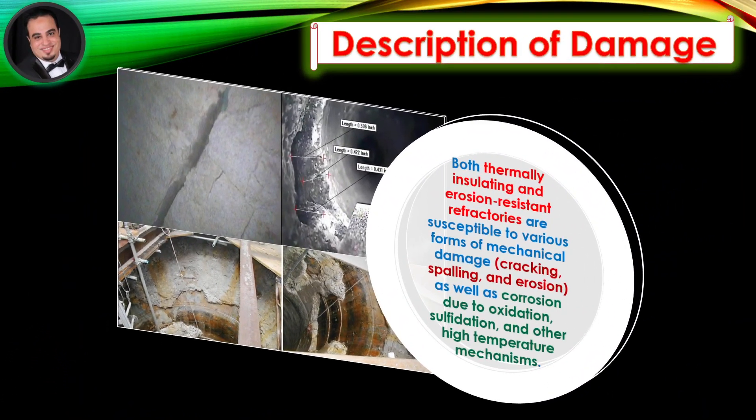Both thermally insulating and erosion-resistant refractories are susceptible to various forms of mechanical damage — cracking, spalling, and erosion — as well as corrosion due to oxidation, sulfidation, and other high-temperature mechanisms.